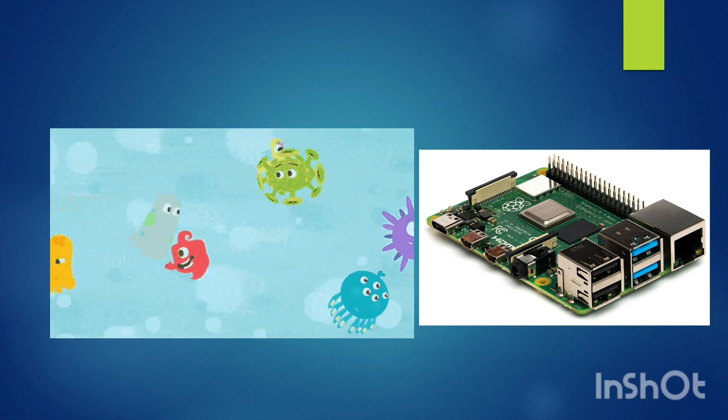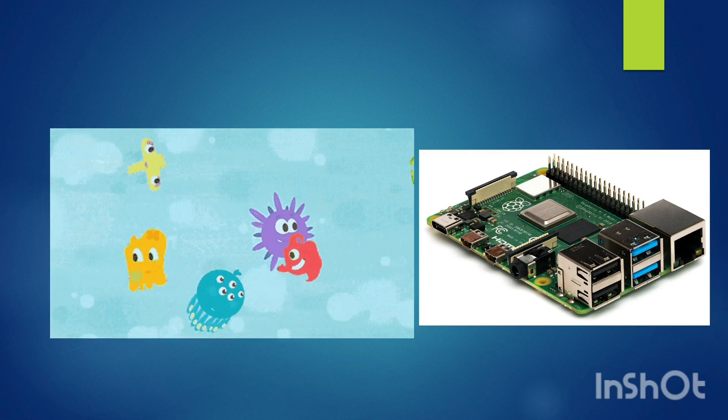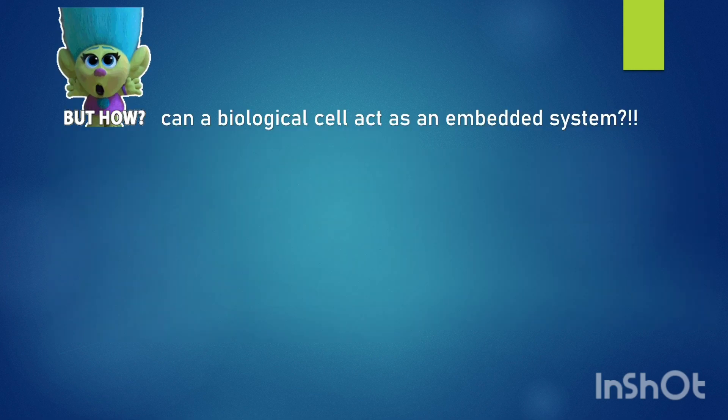Even the bacteria in the human gut can be used as substitutes for nanoscale Raspberry Pi-like devices. But how can a biological cell act as an embedded system?